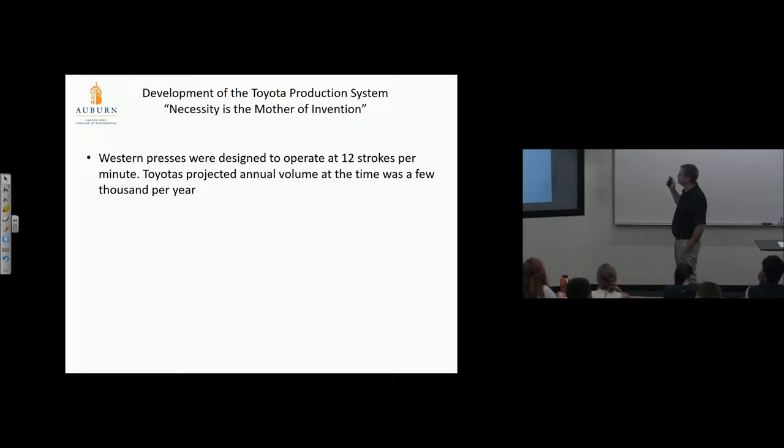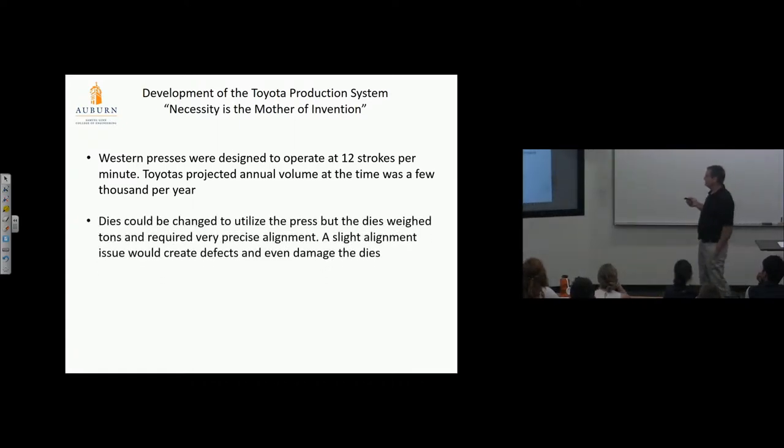Western presses were designed to operate at 12 strokes per minute. Toyota's projected annual volume was a few thousand per year, so these presses would be absurdly underutilized and way too expensive. If you remember that GM video—every six seconds you could see equipment moving. With only a few thousand a year, they can't capitalize a facility like that. Dyes could be changed to utilize the press, but dyes weighed tons and required precise alignment. A slight alignment issue would create defects and could damage dyes.